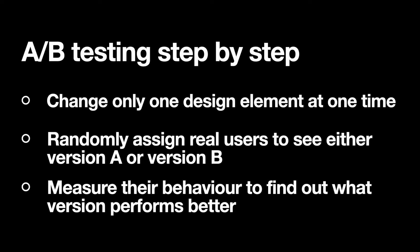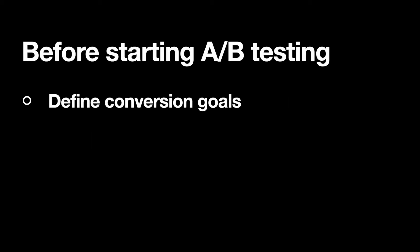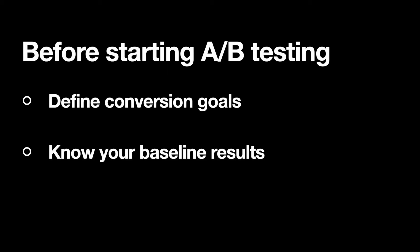Last but not least, we measure user behavior to learn which version performs better. Before starting A-B testing, we need to define the conversion goal — the action we want the user to take on the page. For example, in the context of a landing page, the goal can be signing up for product updates. We should also know the baseline results: the current conversion rate, how users perform right now, and how many visitors click on the sign-up button right now.